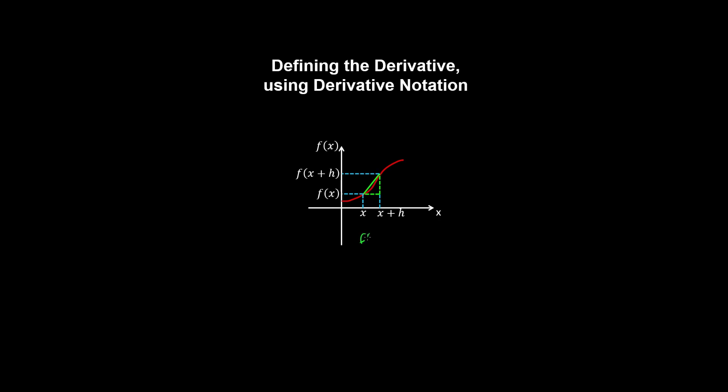So that will be the rise over the run, which is x plus h minus x. And then if we take the limit as h approaches zero, we obtain the slope of the tangent to the curve at x.